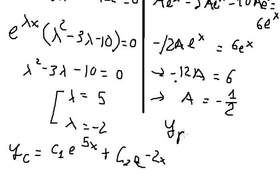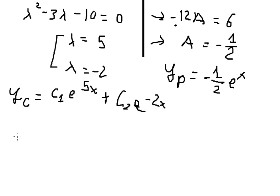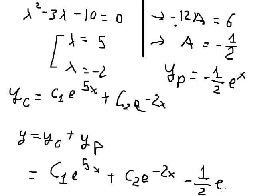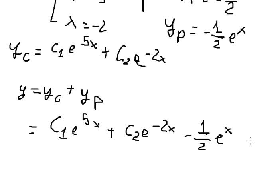So yp equals negative one-half e to the power of x. The final answer combines yc — which is c₁ e to the power of 5x plus c₂ e to the power of negative 2x — and yp, which is negative one-half e to the power of x. This is the final answer. Thank you for watching.